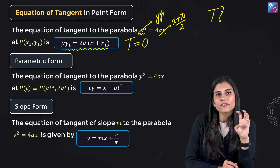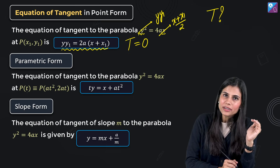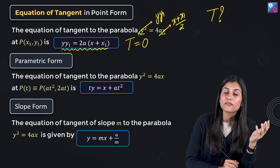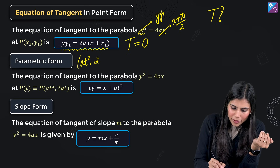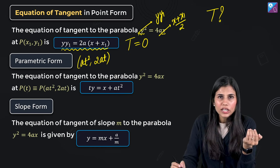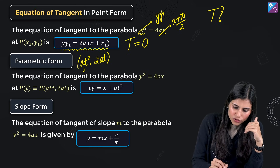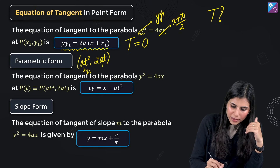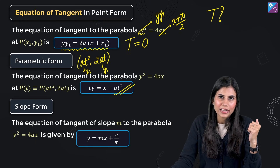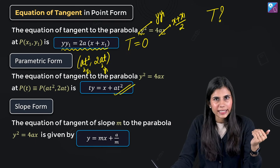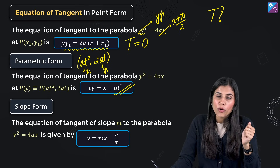This applies when you have the Cartesian coordinates of the point of tangency. For the parametric form, use the point form but substitute x1 = at² and y1 = 2at. You will then get the equation of tangent in terms of T as: ty = x + at², where T is the parameter of the point of tangency.